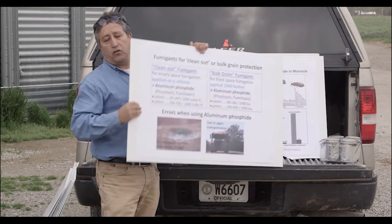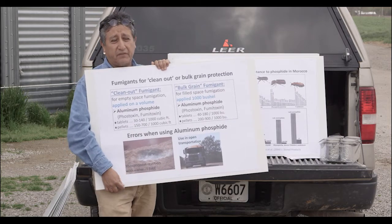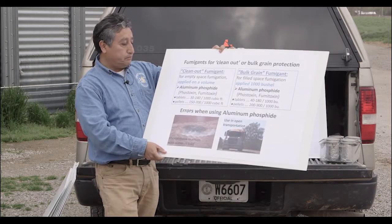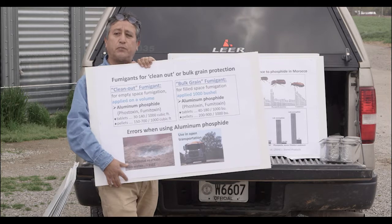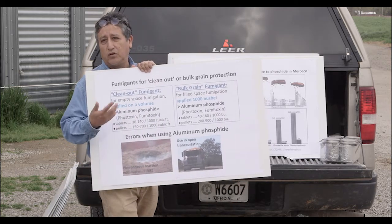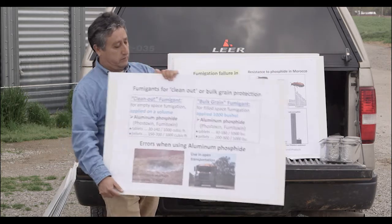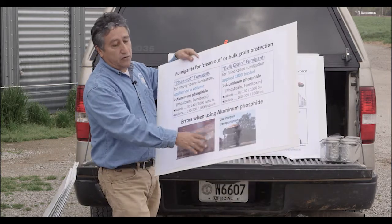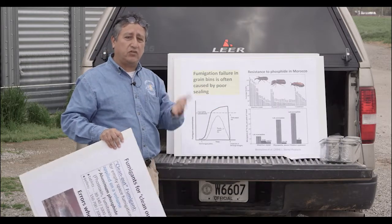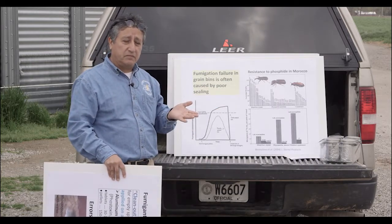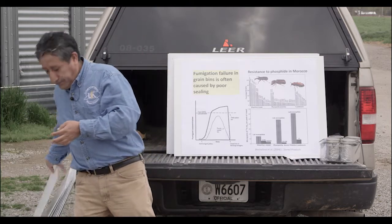Although this is probably not happening much here in the USA, aluminum phosphide reacts with water — so when you put aluminum phosphide and water together it can cause fire. This has happened when transporting cereals from one country to another. Also, if you use aluminum phosphide, you shouldn't use it in open spaces — it needs to be used in closed areas.